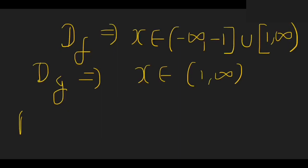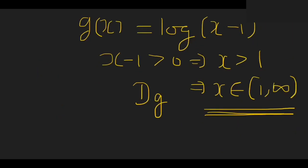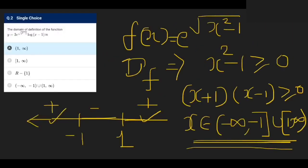Now what will the final domain be? The domain will be the common part of these two ranges, the intersection. So our final answer is x belongs to (1, infinity). Let us see in the question which option is correct. Option A is correct. Thank you.